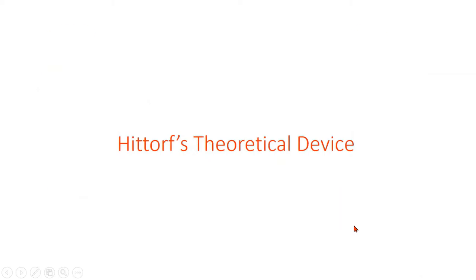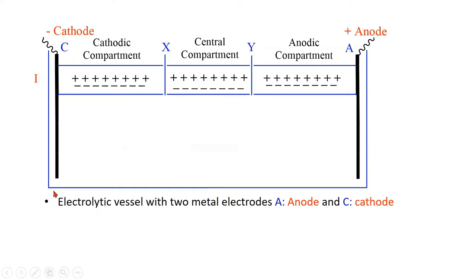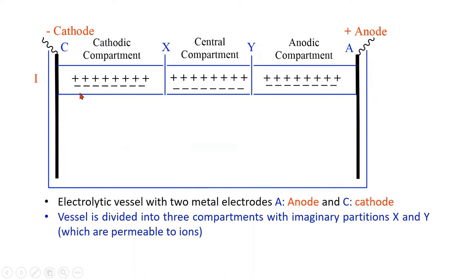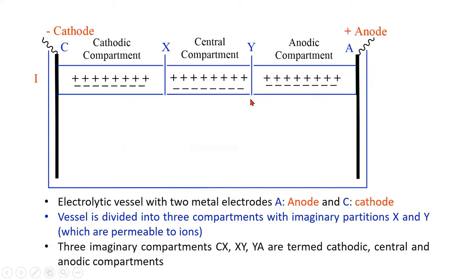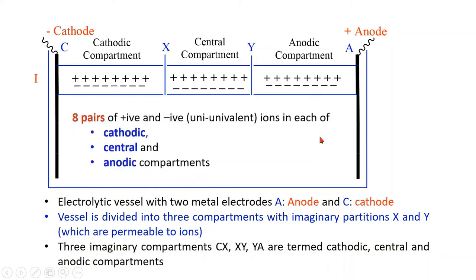Hittorf's theoretical device: Let us consider an electrolytic vessel with two electrodes — A (anode) and C (cathode). The vessel is divided into three compartments with imaginary partitions X and Y, which are permeable to ions. The three compartments CX, XY, and YA are termed as the cathodic, central, and anodic compartments. Eight pairs of univalent ions are present in each of the cathodic, central, and anodic compartments.